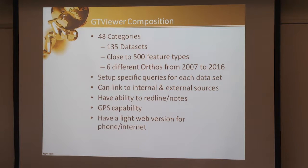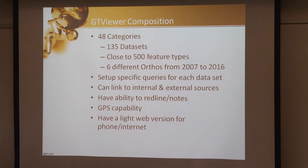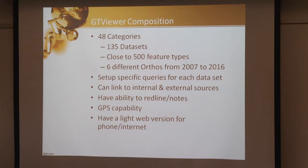Currently we have 48 different categories, 135 data sets, close to 500 feature types, and orthos dating back to 2007. We link to internal and external sources, and we have the ability to do red lines and notes so you can share sessions or share a PDF between people.